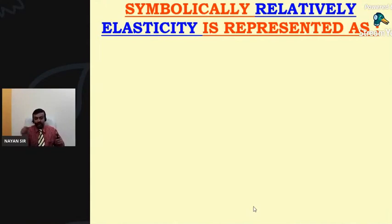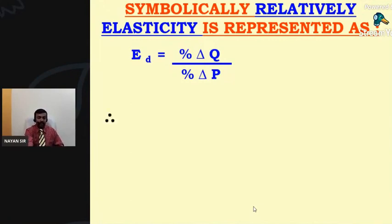Ed = percent delta Q upon percent delta P. So 100 upon 50. We are substituting the values, so 100 divided by 50 is 2.